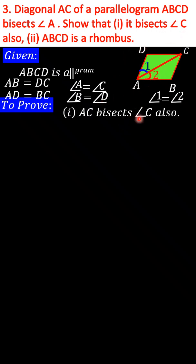It is given that diagonal AC bisects angle A. Therefore, we can say angle 1 is equal to angle 2. Here we have to prove that diagonal AC bisects angle C also, and that ABCD is a rhombus.